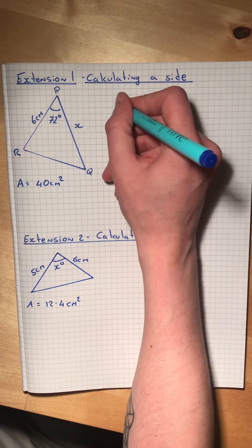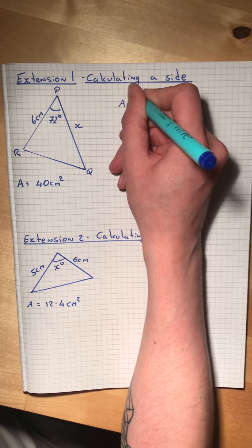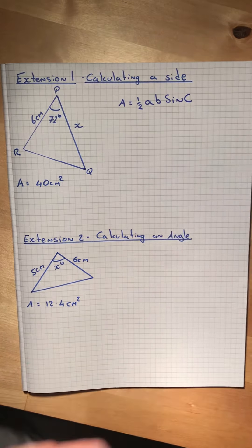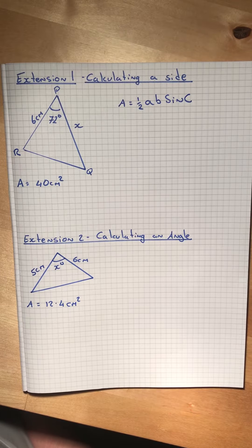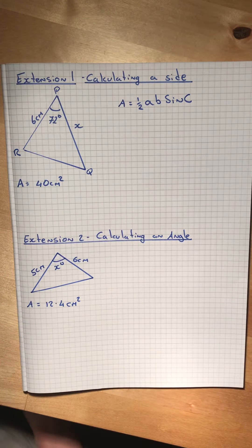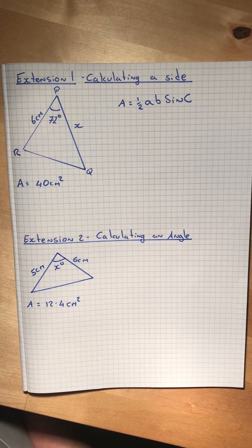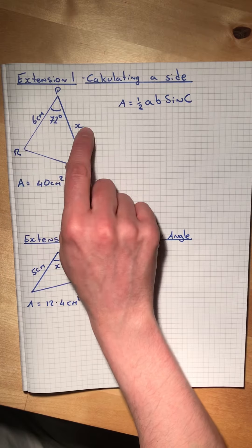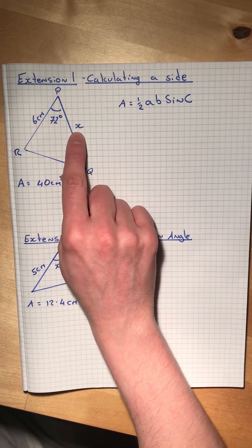So, as always, first step: formula. Area equals one-half a b sine c. You can see this time I've labeled the triangle's points, but just like I said before, it doesn't matter as long as we know we're using two sides and the angle between them. It's just this time we're finding a side.